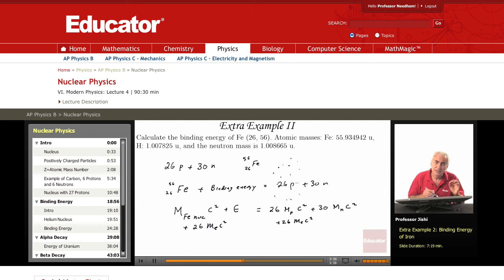Now the mass of the iron nucleus plus 26 Me C squared is the atomic mass of the atom. The atomic mass is almost, there's some binding between the electrons and the nucleus in the atom, but that's usually small, of the order of electron volts, so we ignore it and we take the mass of the atom as the mass of the nucleus plus the mass of the electrons.